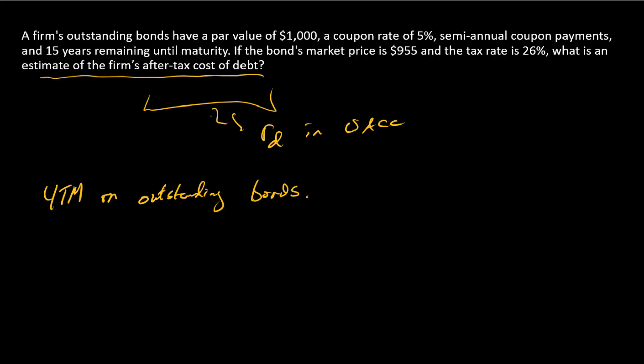So what do we have here? We've got a par value, and this is per bond, so we've got a par value of $1,000, the market price of $955. And so when we think about the math of our bond pricing formula, that's going to be an FV, and that's going to be a PV. We'll give this a negative sign when we plug it into our calculators.